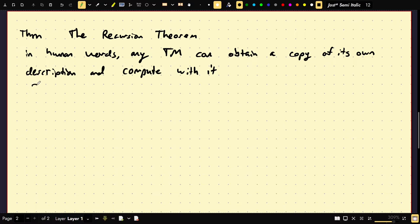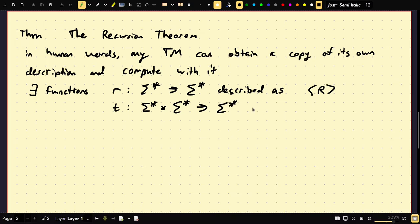As Sipser defines it, there exists functions from sigma star to sigma star, described as Turing machine R. So this string of the encoding of this Turing machine represents the computable function, lowercase r. And then there also exists a function T, which takes on an input. It's actually a double parameterized. It takes as input two strings and outputs a single string. Such that the computable function R on W is equal to T on the encoding of R on W.